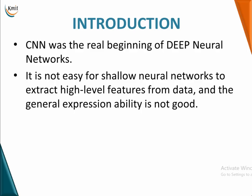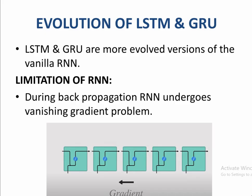CNN was the real beginning of deep neural networks. It was not easy for shallow neural networks to extract high level features from data and general expression ability was not good. Also, CNN could not be extended for sequential data. LSTM and GRU are the more evolved versions of vanilla RNN.